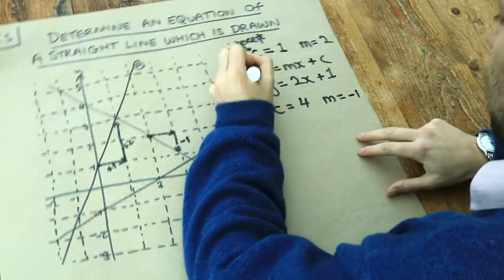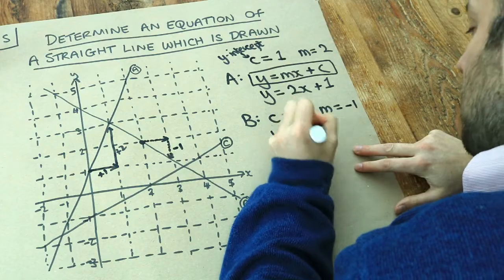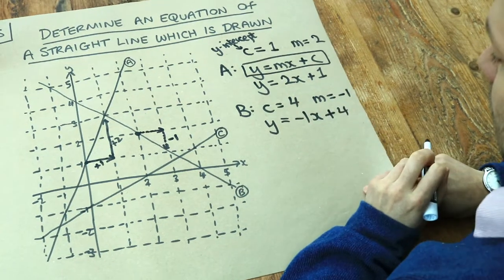And then using y equals mx plus c again, we get y is equal to minus x plus 4. And there we go, there's your equation.